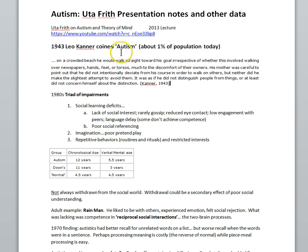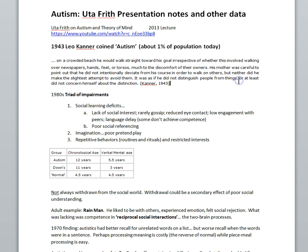The term autism can be traced back to the work of Leo Kanner back in the 40s, who made some of the first descriptions of children. Here is one of those descriptions: On a crowded beach, he — the autistic child — would walk straight toward his goal, irrespective of whether this involved walking over newspapers, hands, feet, or torsos, much to the discomfort of their owners. His mother pointed out that he did not intentionally deviate from his course in order to walk on others, but neither did he make the slightest attempt to avoid them. It was as if he did not distinguish people from things, or at least did not concern himself about the distinction. From this quote, we get the sense that people are not being processed in the way a typically developing child would process people.